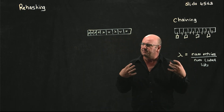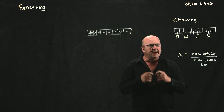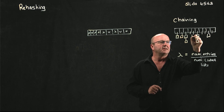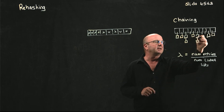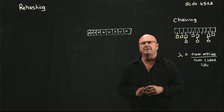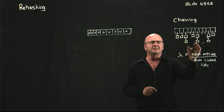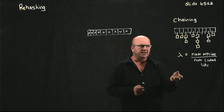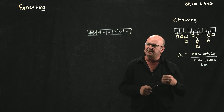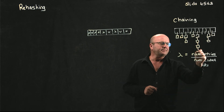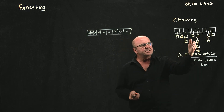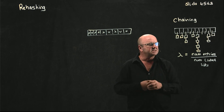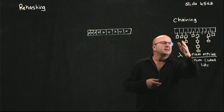With chaining, our data structure can have more elements in it than the size of the array, because as we start adding things, at some point we're going to add things to our linked lists. So with chaining, we can allow lambda to become larger than one, at the cost of having some linked lists with multiple elements. We don't want lambda to become too large, because we'd end up looking through many elements in a linked list. We want to keep lambda small so that we keep our linked lists short.